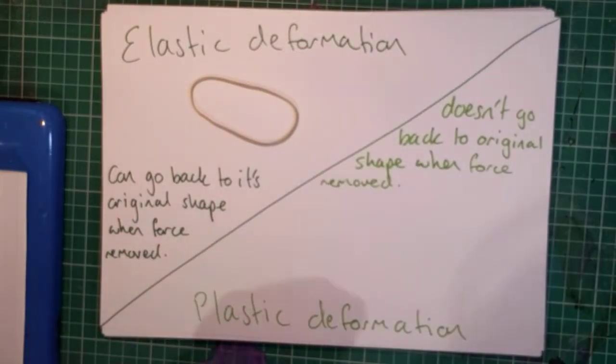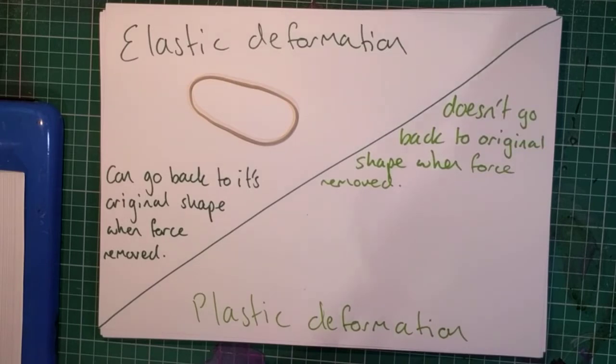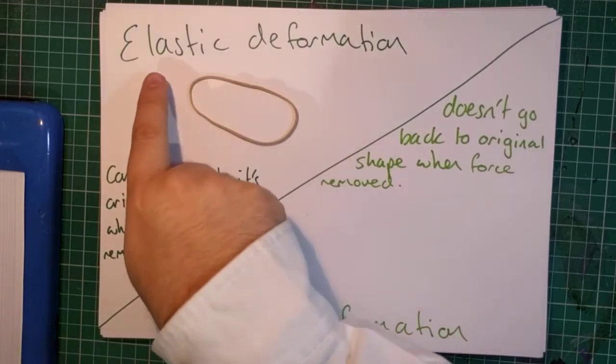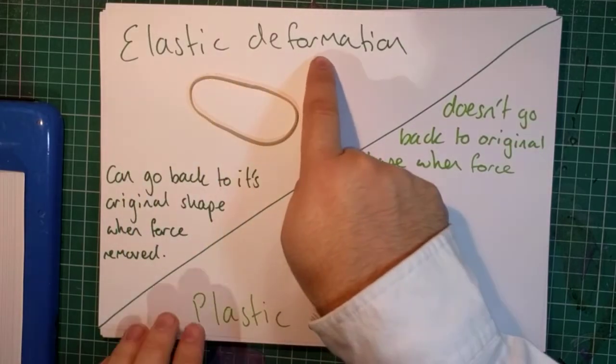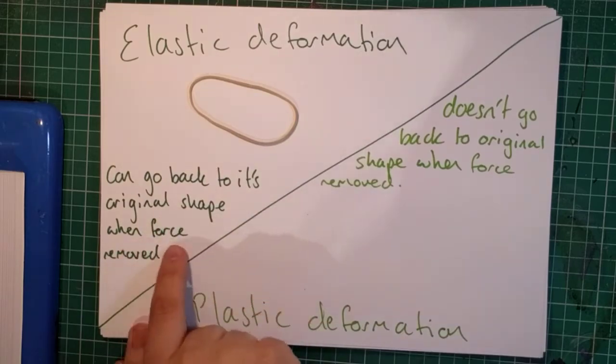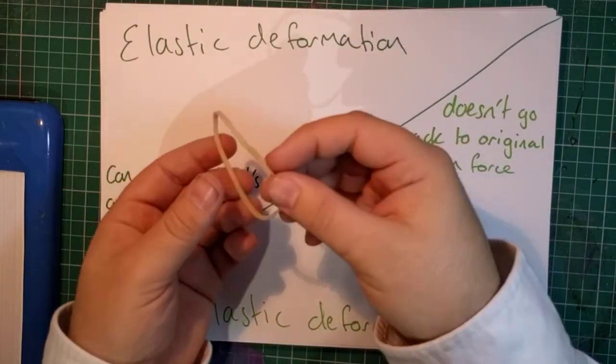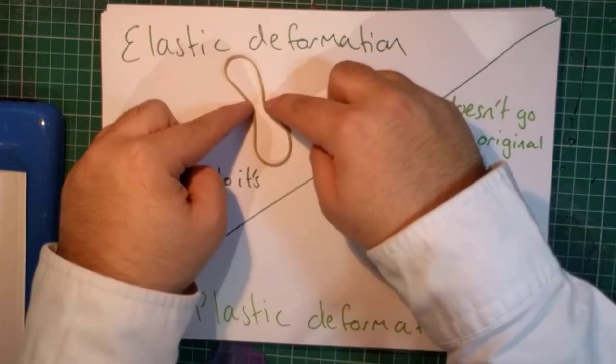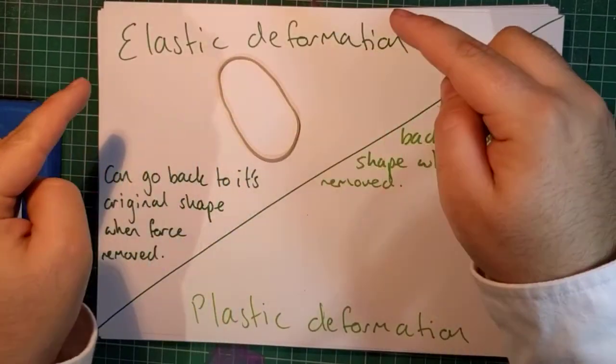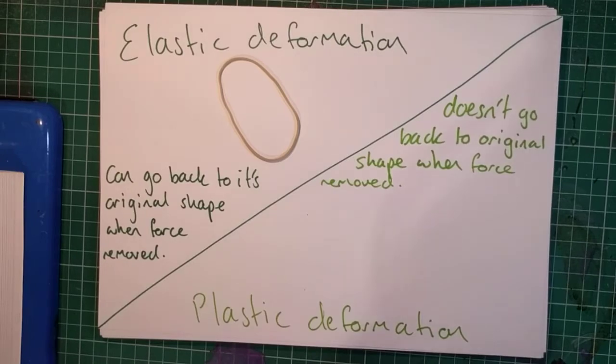Now there is a point beyond which it won't go back, but we'll talk about that in a later video. So if something elastically deforms, then it can go back to its original shape when the force is removed. Likewise with this elastic band, if I press this elastic band in like this and I let go, it returns to its original shape.